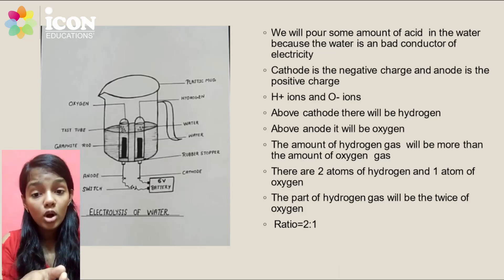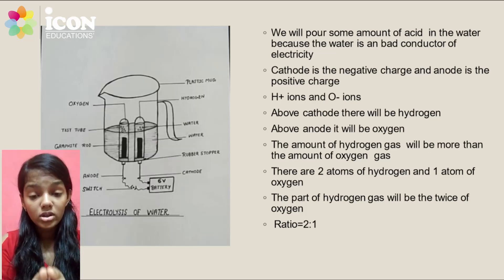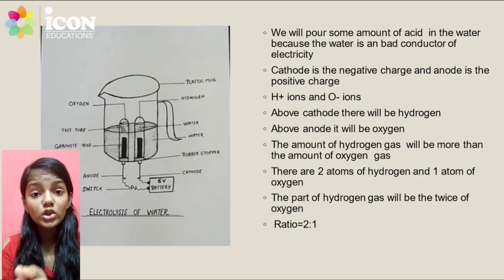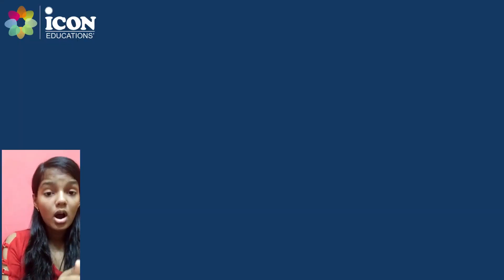This is because, looking at the formula H2O, there are two atoms of hydrogen and one atom of oxygen. So the amount of hydrogen gas collected will be twice the amount of oxygen gas collected — the ratio of hydrogen to oxygen is 2:1. This is how the process of electrolysis of water takes place. I hope you understood it and liked it.